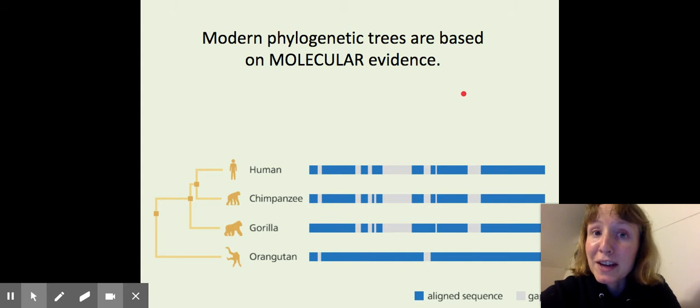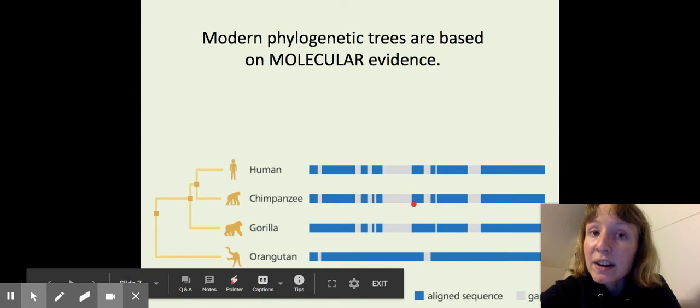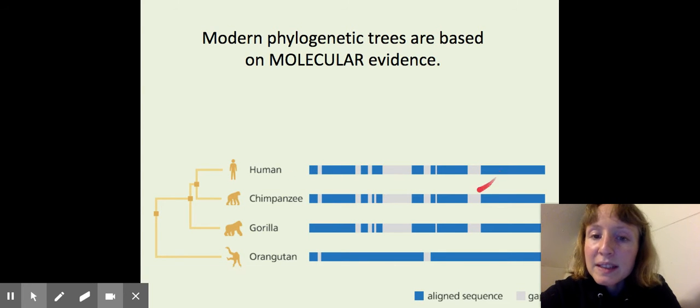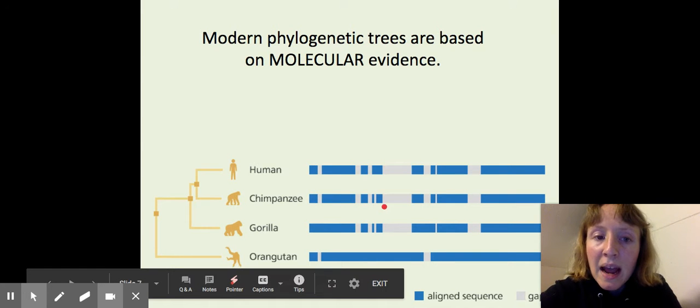Modern phylogenetic trees are almost always now based on molecular evidence, so evidence in the DNA. Here you see a DNA sequence and it's showing the parts that are shared and common. If we look at the human sequence and the chimpanzee sequence, you see that it's almost all the same except for right there, and that means that they are closely branched on the tree.